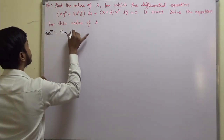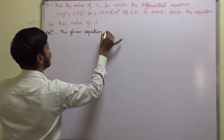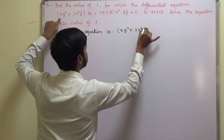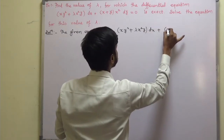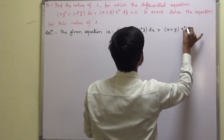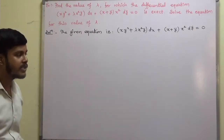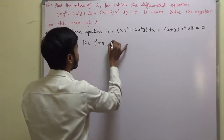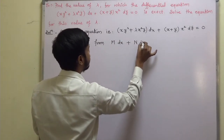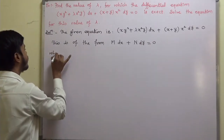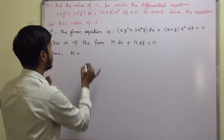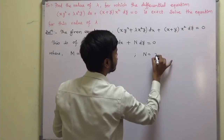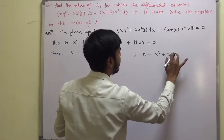The given equation is: x y squared plus lambda x squared y into dx plus x plus y into x squared dy equals 0. This is of the form M dx plus N dy equals 0, where M is equal to x y squared plus lambda x squared y, and N is equal to x cubed plus x squared y.